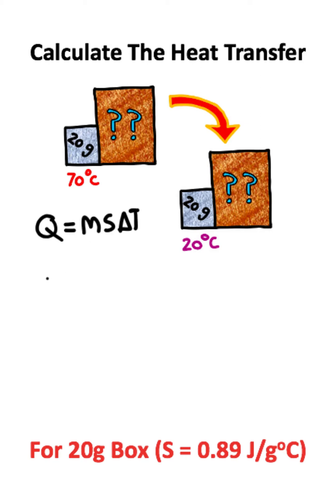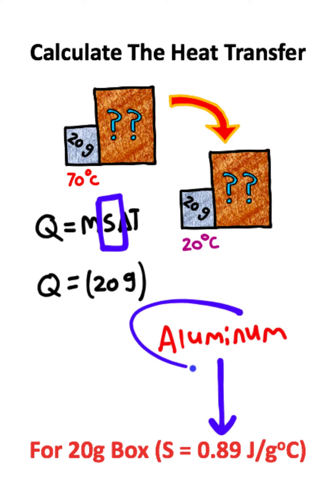So what I'm going to do is plug in the variables that we have. The mass is given to us as 20 grams. The specific heat capacity is given to us in the problem, which is the specific heat capacity for aluminum.